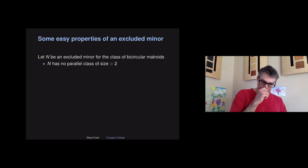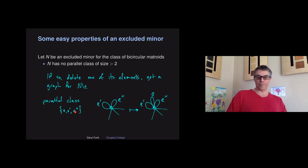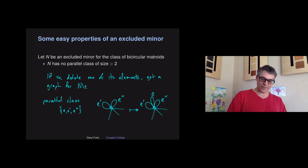An excluded minor can have parallel classes, but not of size three or bigger. If you had a parallel class with three elements, delete one of them, you get a graph where E' and E'' are still in parallel — so they have to be a pair of loops incident to a vertex. That's how parallel elements must be represented in the bicircular matroid. Just throw the deleted element back on; now you've got a bicircular representation of your purported excluded minor with a parallel class of size three. No problem — it's not excluded.